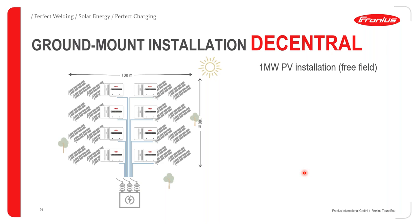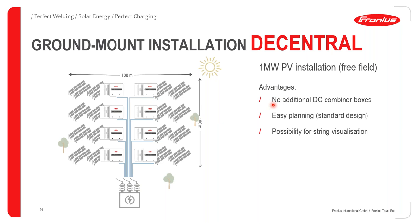Now let's look at the decentralized variant — a ground mount installation. Here the inverters are close to the modules, meaning the modules are connected directly to the inverter via MC4 connectors. This means we have short DC runs from the modules to the inverters, but long AC cable runs to the transformer. All eight inverters have long AC cable runs going through to the transformer. The advantage is no additional DC combiner boxes are needed, it makes for easy planning, and you can have string monitoring or visualization with this kind of installation.